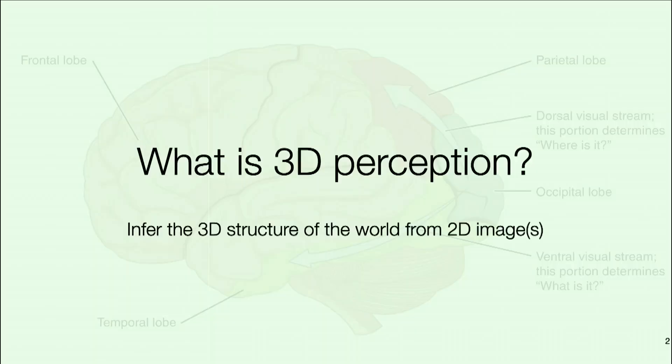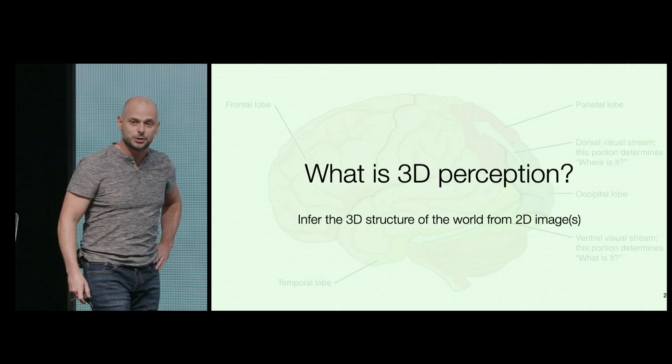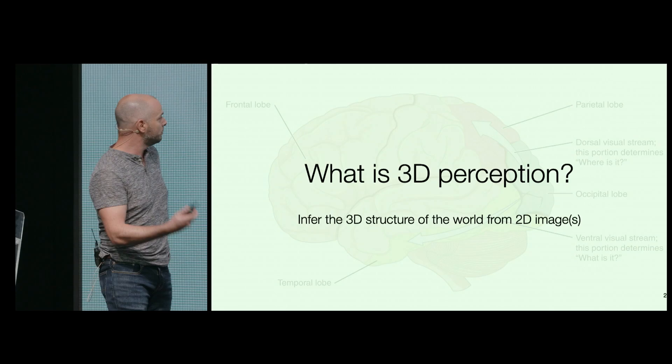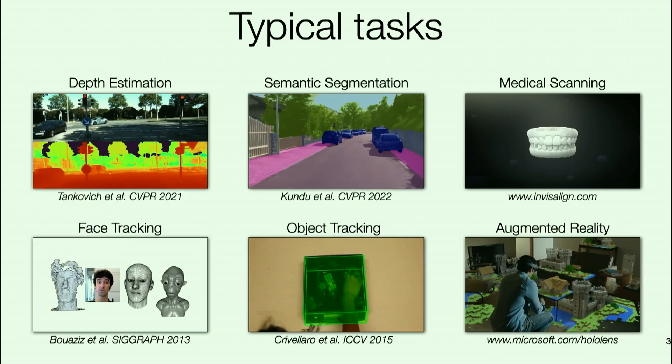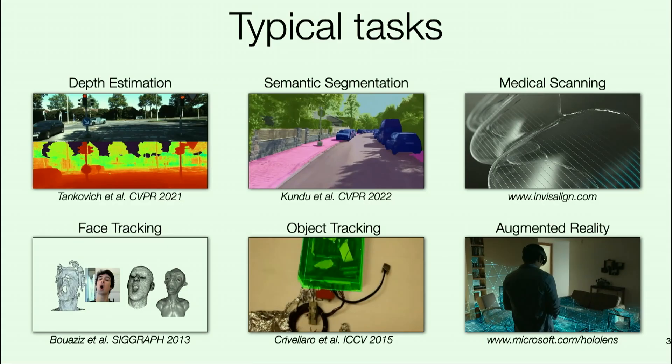Your eyes receive images on the retina and transmit them to the brain, and the part of the brain in the bottom right of the image has the task to actually build the representation that allows you to operate within the 3D environment within which you live. If you look at typical tasks for 3D perception, you can see some right here — for example, predicting the depth map or distance of objects within an image, or what part of the image belongs to which semantic category in semantic segmentation.